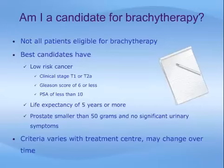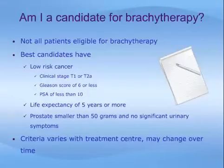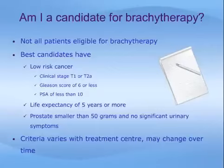Not all patients have a cancer suitable for this treatment. Most experts agree that the best candidates meet these criteria: clinical stage less than T2B, a Gleason score of less than 6 or 7, a PSA of less than 10 to 15, life expectancy of at least 5 to 10 years or more, and a prostate size smaller than 50 grams with no significant urinary difficulties or prior history of transurethral resection of the prostate or TURP. Different treatment centers will have different eligibility criteria, and these criteria might also change over time. Patients with higher risk features may be candidates for external radiation therapy or surgery.